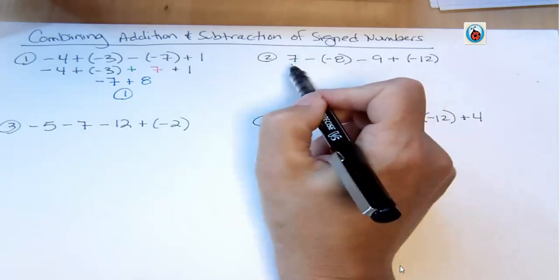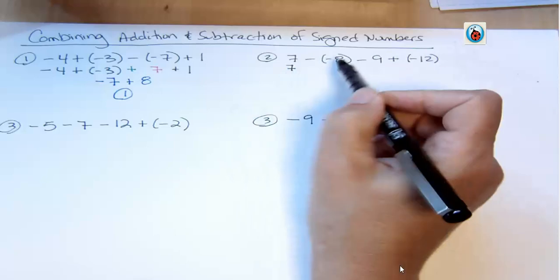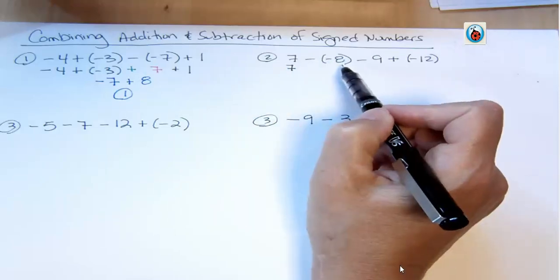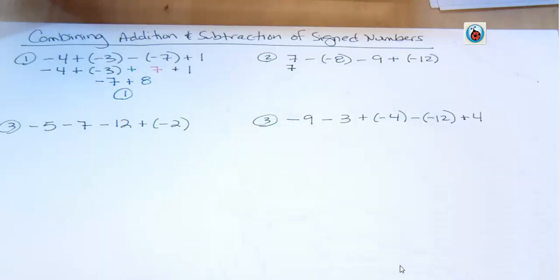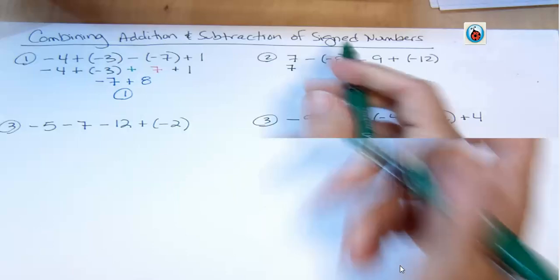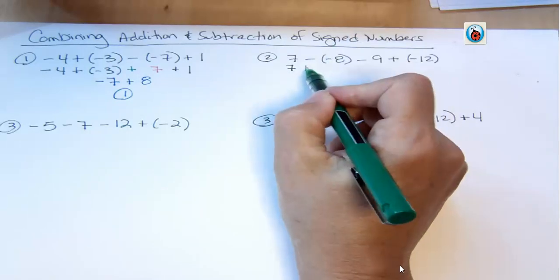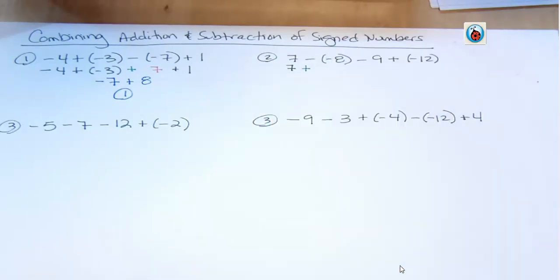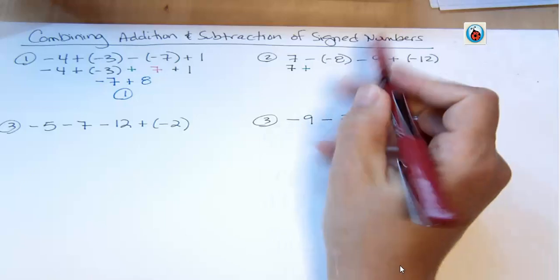Now I'm going to leave this one the same. So the next one, do I change it or do I keep it the same? Well, it's subtraction. I always want to change subtraction, so I'm going to make a change. Subtraction becomes addition. The sign of the next term has to change. Negative 8 becomes positive 8.